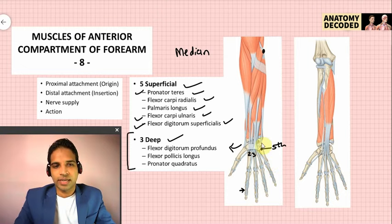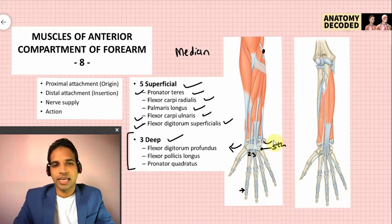Flexor carpi ulnaris attaches distally to the pisiform bone, and via the pisohamate and pisometacarpal ligaments to the base of the fifth metacarpal. Its action is flexion and adduction at the wrist joint, acting along with extensor carpi ulnaris.